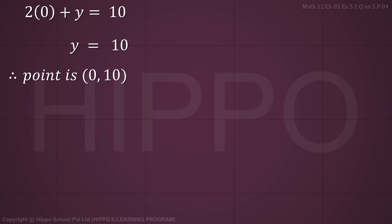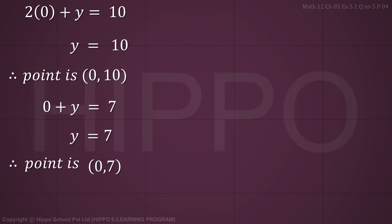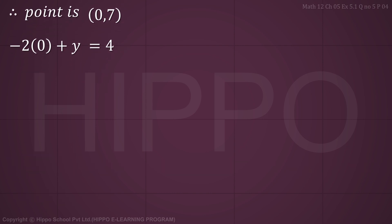For equation 2, put x equals 0: 0 plus y equals 7, so y equals 7. The point is (0, 7). For equation 3, put x equals 0: minus 2 times 0 plus y equals 4, so y equals 4. The point is (0, 4).